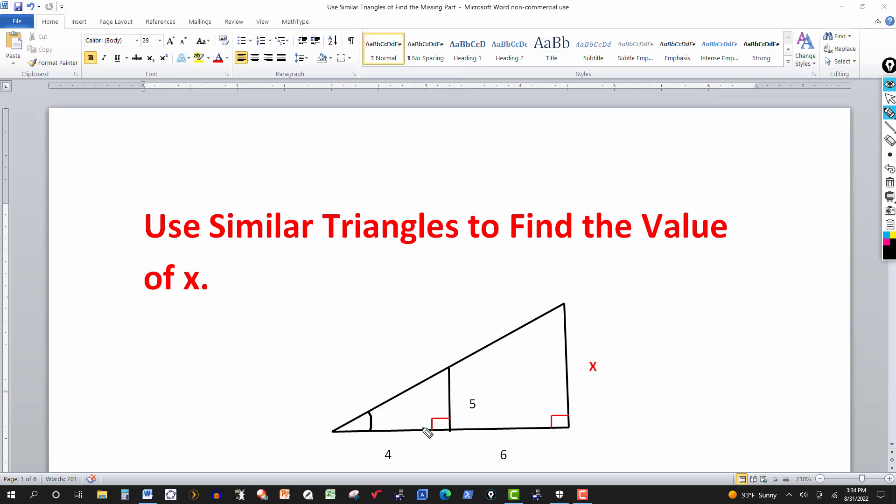Notice again that for the small triangle, the base side here is four. And for the large triangle, it's broken up into two parts. So it's four and six. That would be ten.